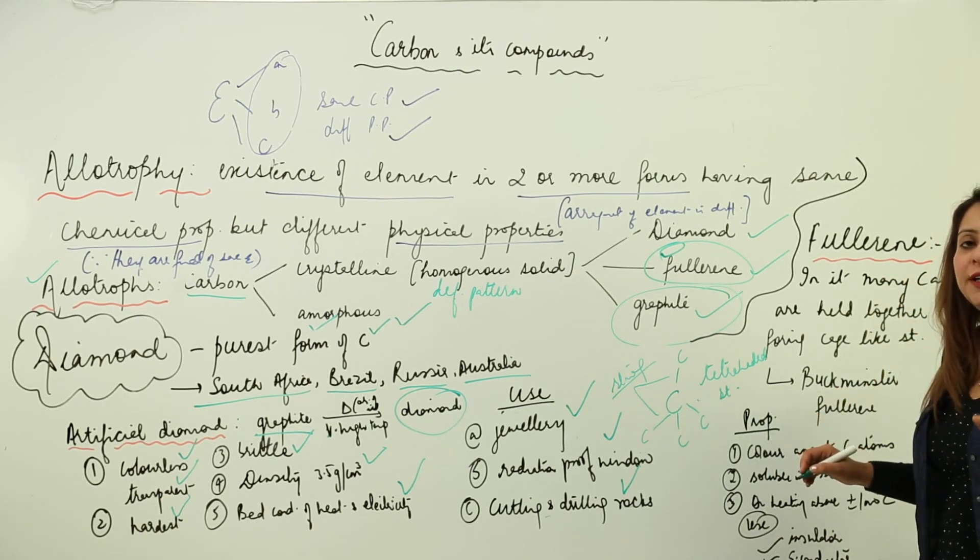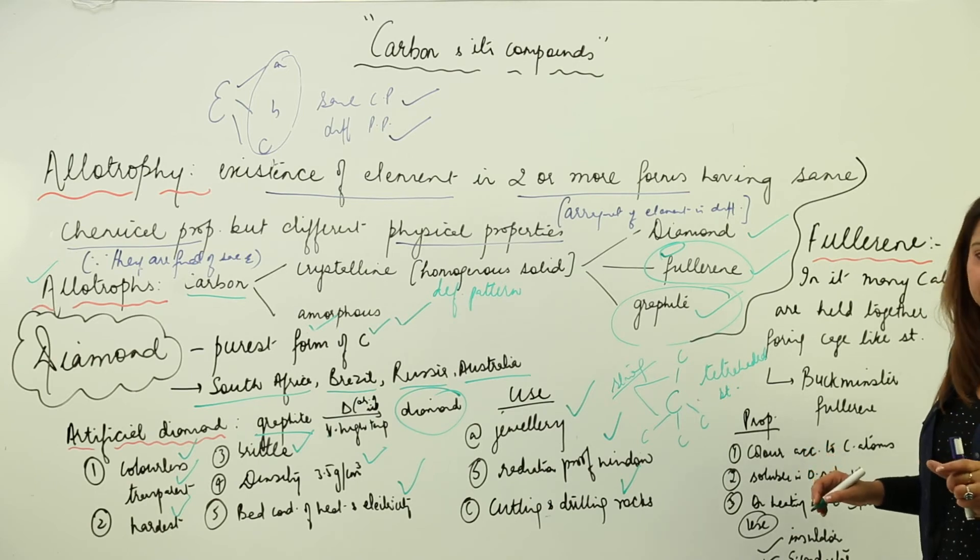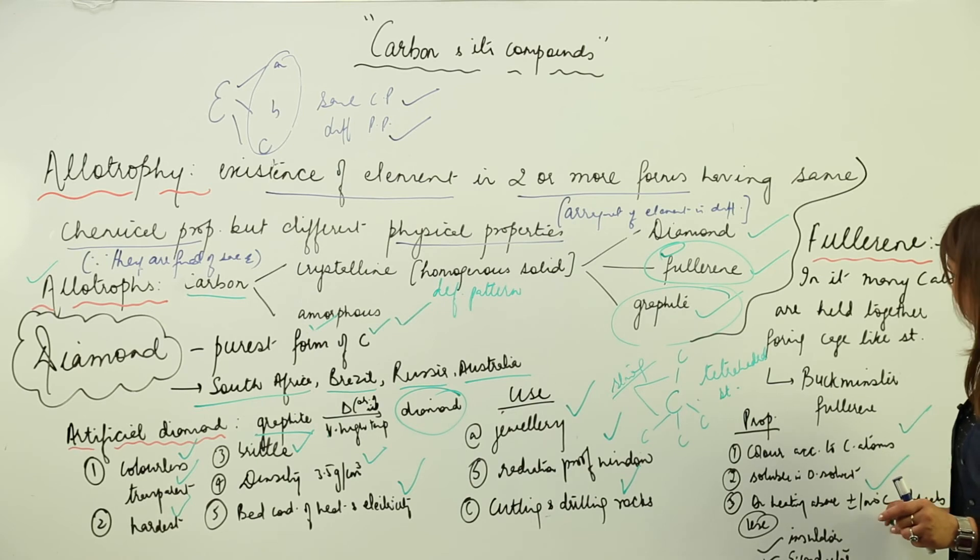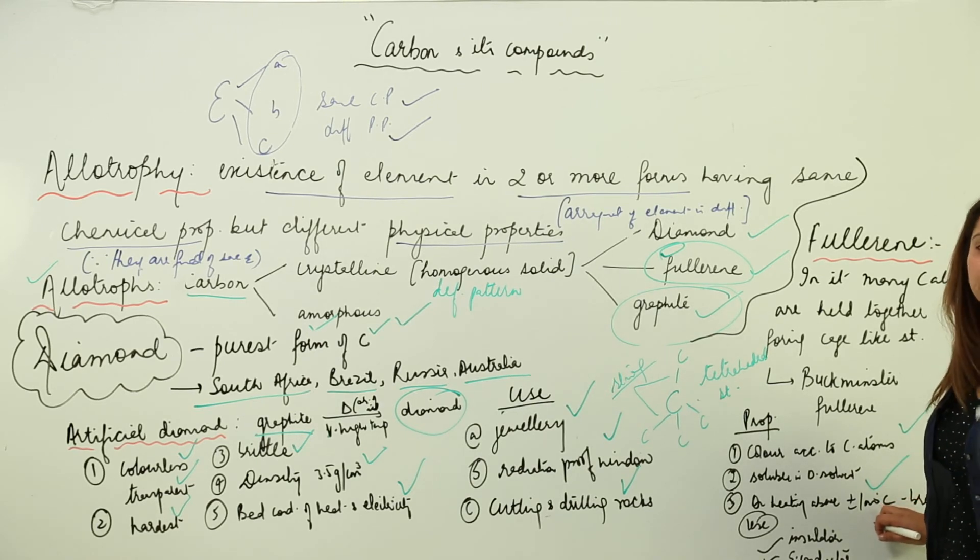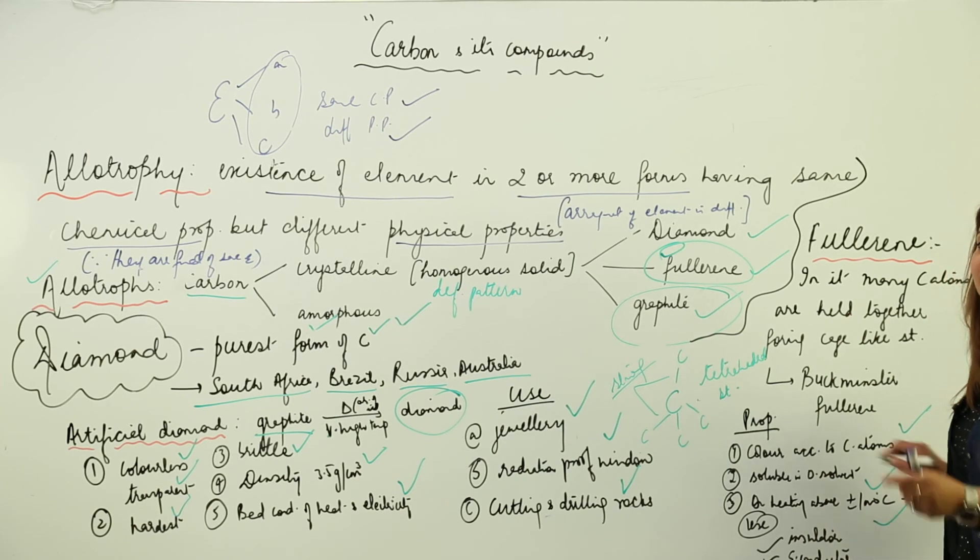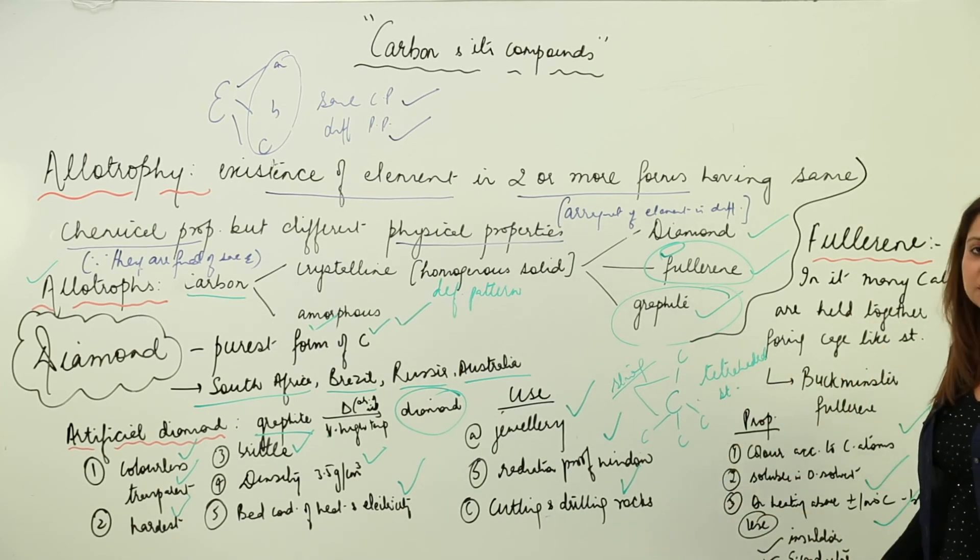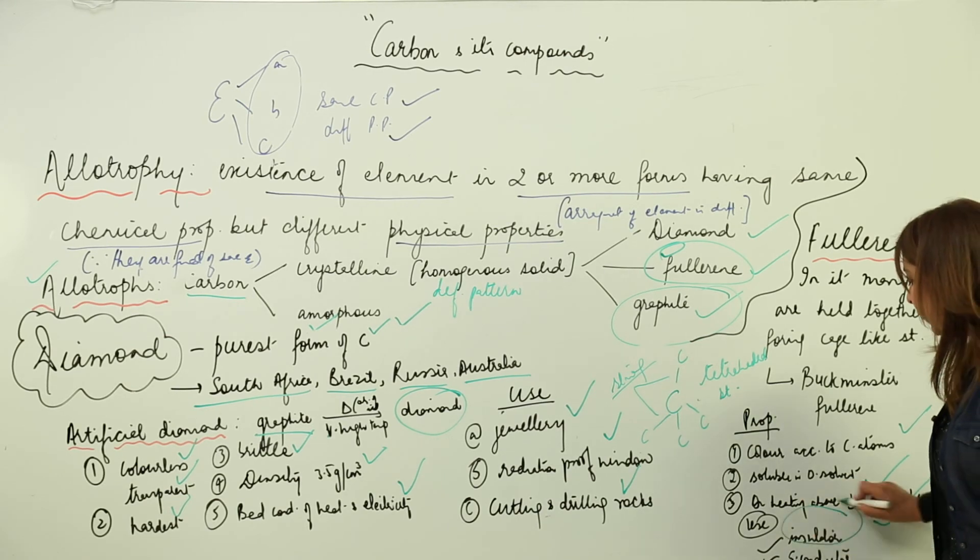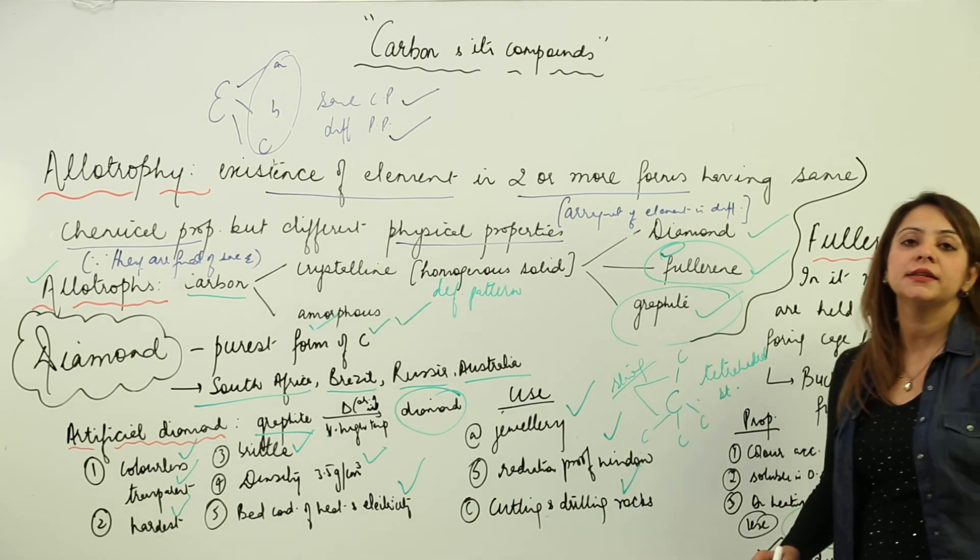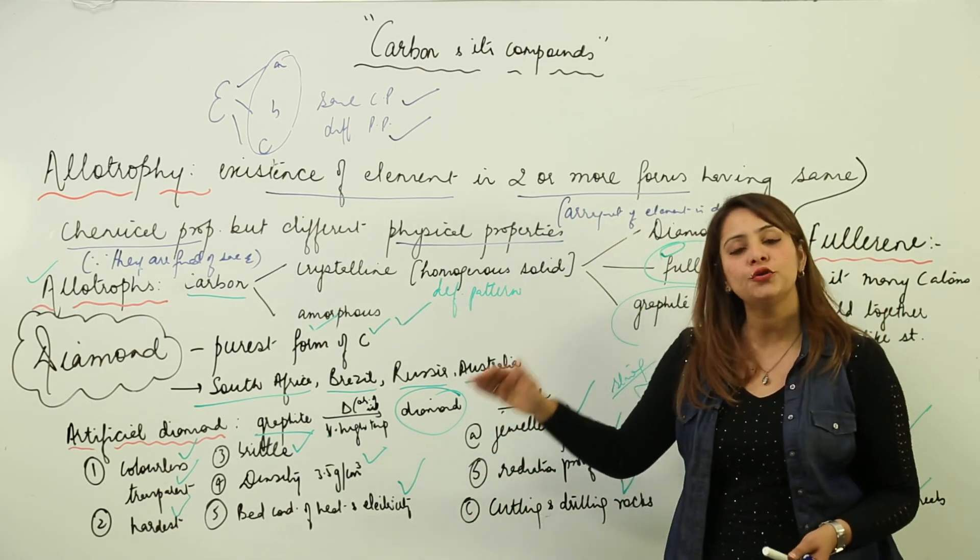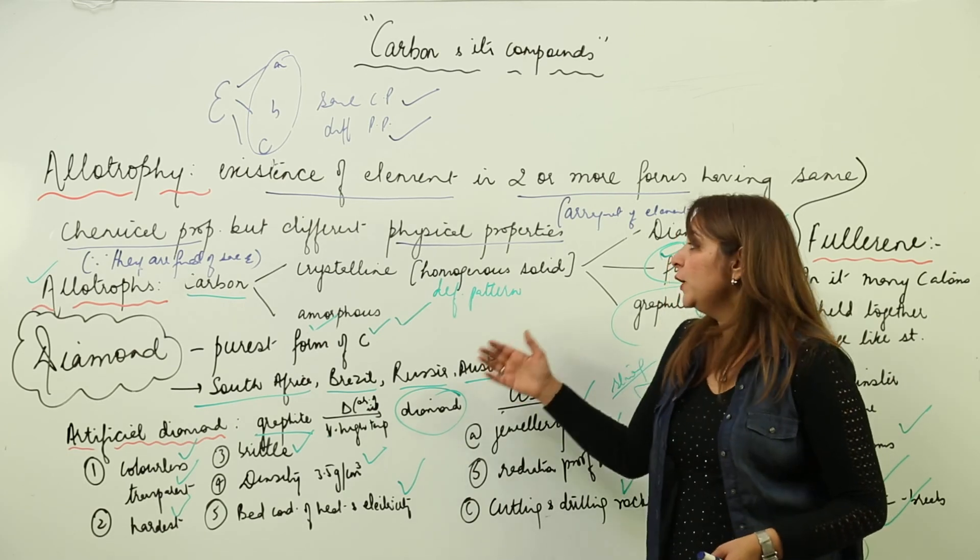If you look at the properties, we see that fullerene is colored, but the color of the fullerene allotrope depends upon the number of carbon atoms it contains. Moreover, it is soluble in organic solvents. If we heat it above or below 1000 degrees Celsius, the cage breaks and the carbon atoms start separating. It is used as an insulator and in some cases as a superconductor also.